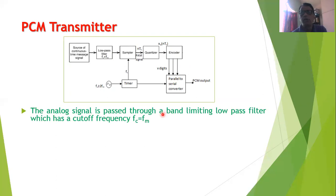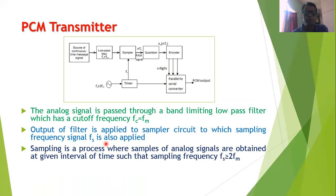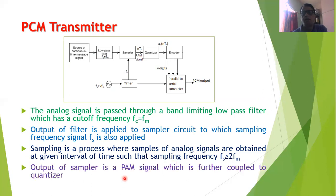The analog modulating signal is passed through a band-limiting low pass filter with cutoff frequency FC equal to FM, so that all unwanted frequencies are rejected. The output of the filter is connected to the sampler circuit along with the sampling frequency FS. Sampling is a process where samples of the analog signal are obtained at a given interval of time such that FS should be greater than or equal to twice FM. This is the Nyquist criteria. The output of the sampler is a pulse amplitude modulation signal, or PAM signal, which is connected to the quantizer.